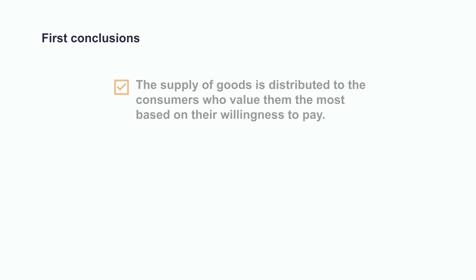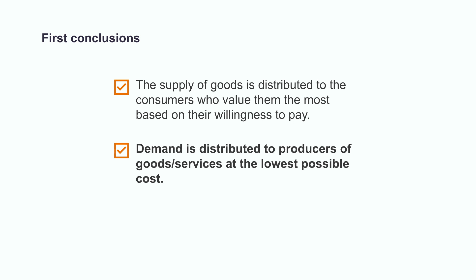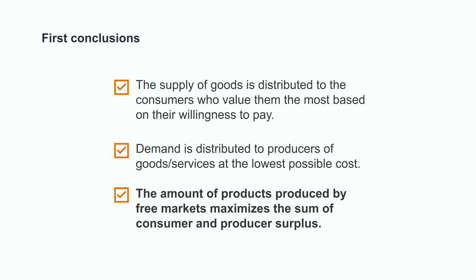Three conclusions concerning market outcomes follow from these observations — that means competitive markets where the products being traded are exactly the same. First, the supply of goods is distributed to the consumers who value them the most based on their willingness to pay. Remember Manon and Pierre's example — whoever values a good the most is most likely to buy it and will have better chances to satisfy his or her needs. Secondly, in a free market, demand is distributed to producers of goods and services at the lowest possible cost. This is intuitive since whoever produces at lower cost is more likely to have more consumers.